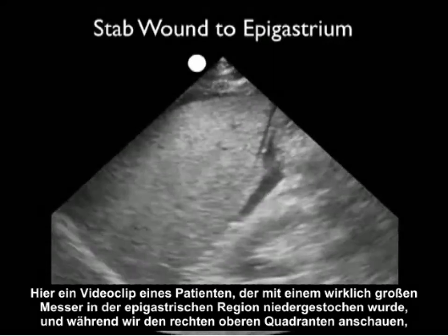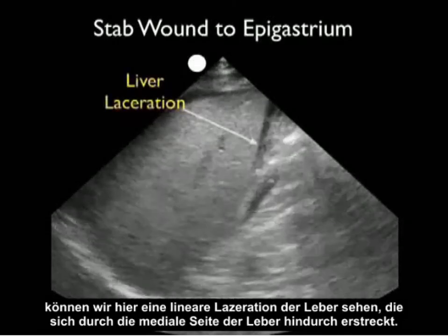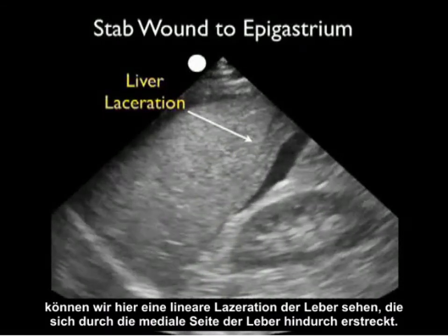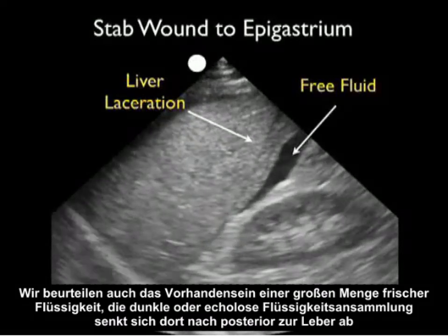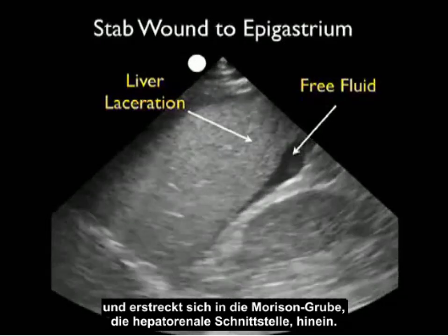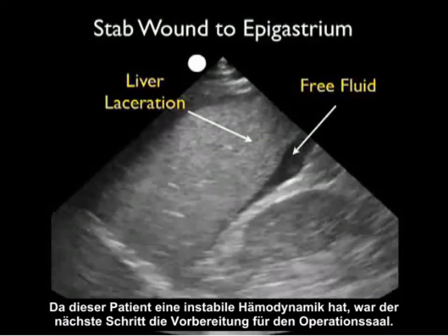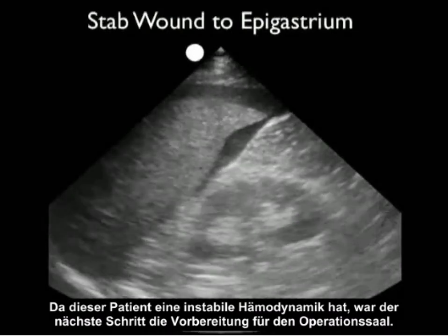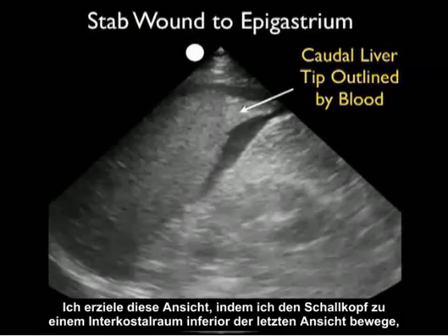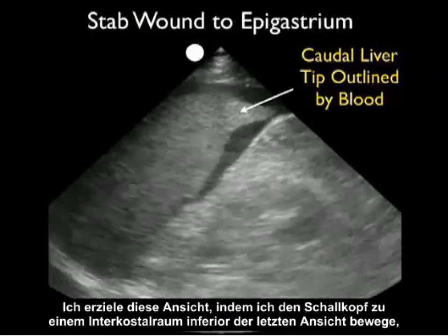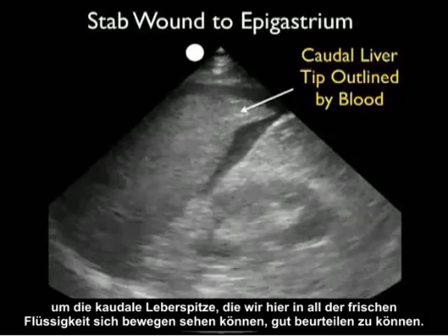Here's a video clip from a patient who was stabbed with a large knife to the epigastric region. Looking at the right upper quadrant, we can see a linear liver laceration extending through the medial aspect of the liver. We also appreciate a large amount of fresh fluid — that dark or anechoic collection — layering posteriorly to the liver and extending into Morrison's pouch. As this patient had unstable hemodynamics, the next step was to go to the operating room. Moving the probe one intercostal space inferior, we can see the caudal tip of the liver waving around in all the fresh blood.